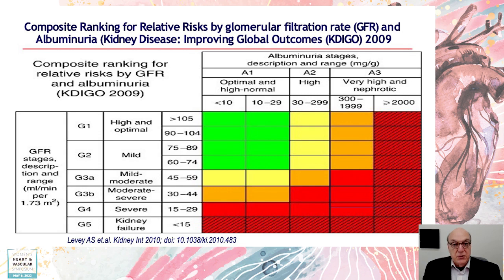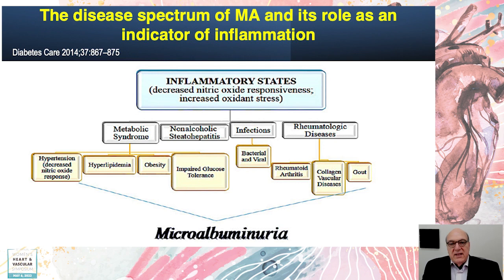It's very important per guidelines to measure a spot albumin-creatinine ratio in all these patients so that you know where they are. The higher the value, the more trouble they're in. If you need help from nephrologists, please ask them — they'll be more than happy to guide your therapy. Even at low levels, like microalbuminuria, that is a cardiovascular risk marker that should not be taken lightly and should be intervened with as well.